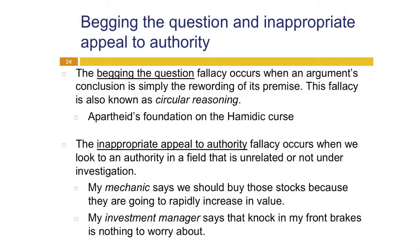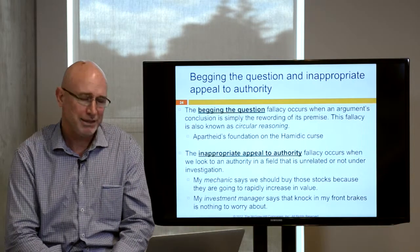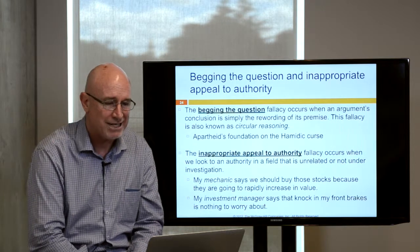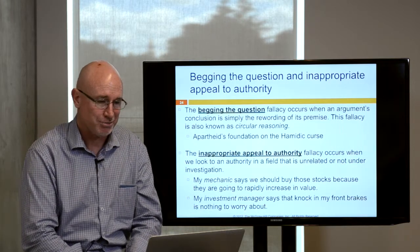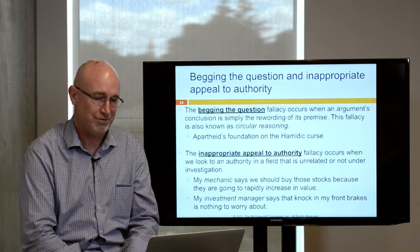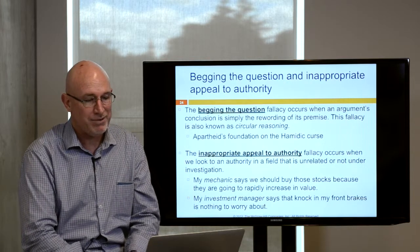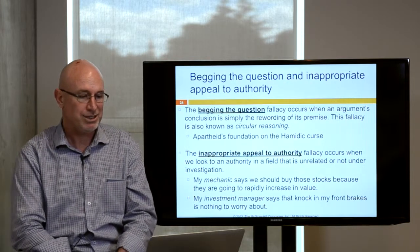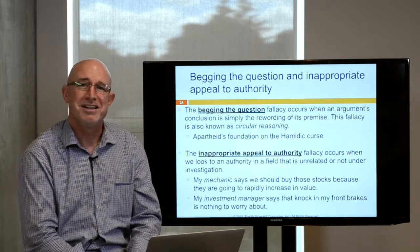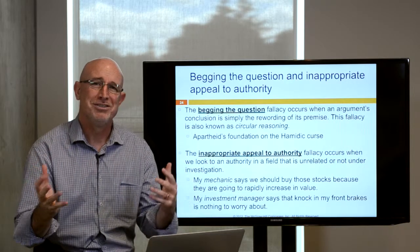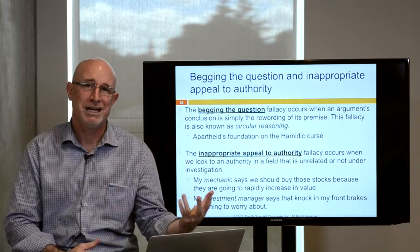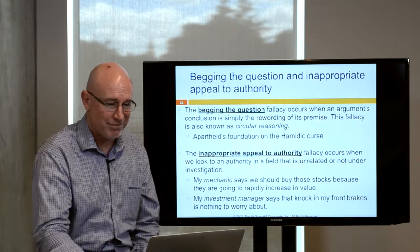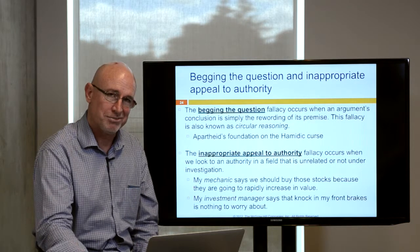The inappropriate appeal to authority fallacy occurs when we look to authority in a field unrelated to the one under investigation. For example: my mechanic says we should buy those stocks because they're going to rapidly increase in value. Or: my investment manager says that knock in my front brakes is nothing to worry about. These appeal to incorrect authorities — I'd rather have the mechanic look at my brakes and the investment manager look at my stocks.